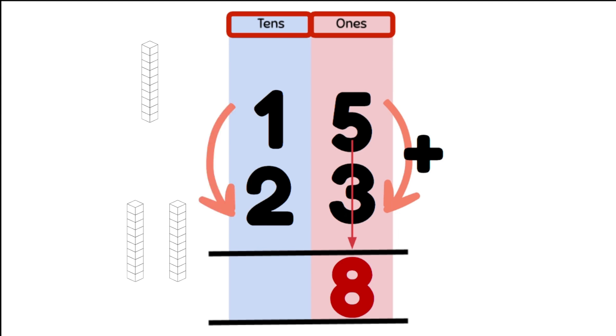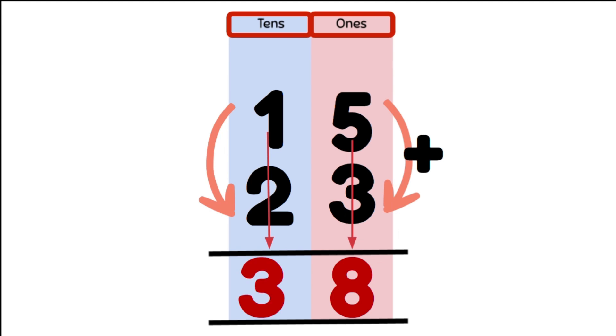That gives us eight ones and we write the answer below in the ones column. We then add our tens. One ten plus two tens gives us three tens, and we write this answer below in the tens column. So the answer is three tens and eight ones, which is 38.